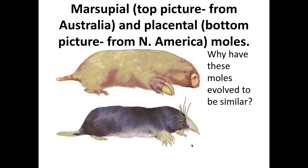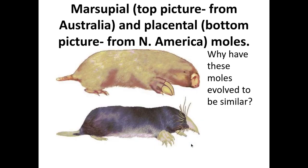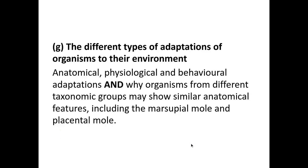The reason they've developed different reproductive systems is due to speciation. All continents used to be joined together in a supercontinent called Pangaea, and Australia and North America used to lie next to each other. Due to continental drift they split apart, which allowed the placental mole and the marsupial mole to evolve through allopatric speciation — being separated by a geographical barrier — developing into different species that can no longer interbreed.